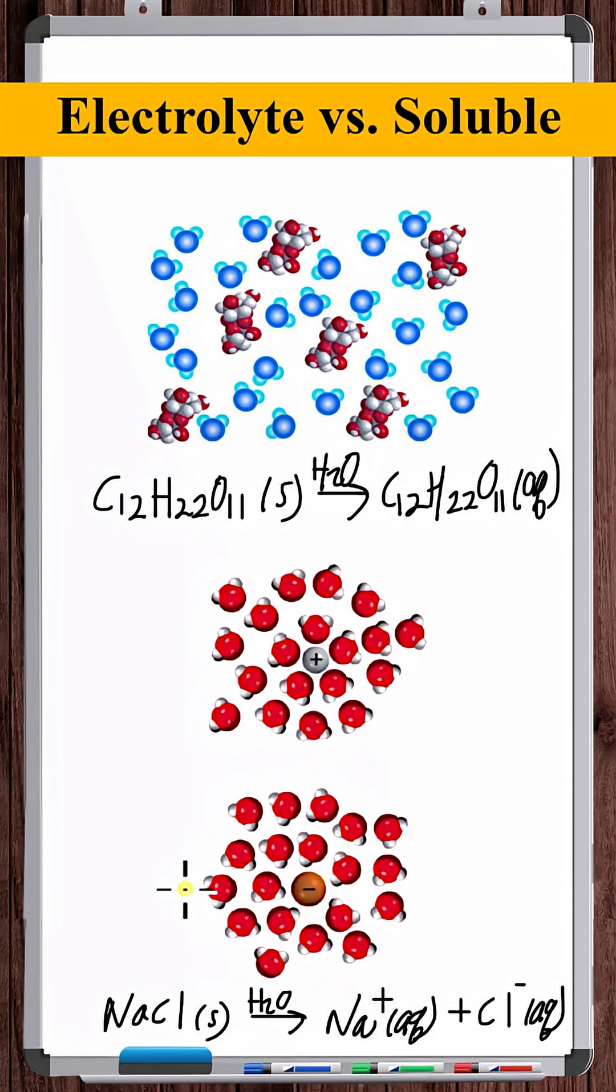An electrolytic property is referring to when that substance is dissolved in water, does the resulting solution conduct electricity? If it does, that substance is an electrolyte. If it doesn't, it's a non-electrolyte.